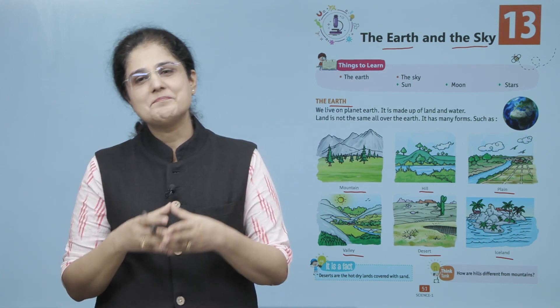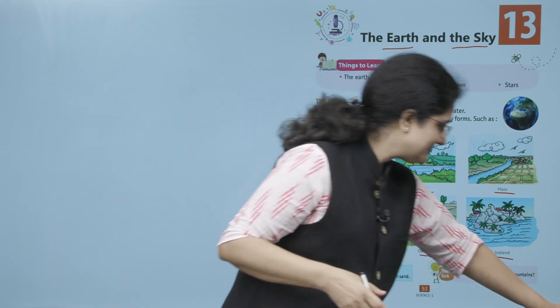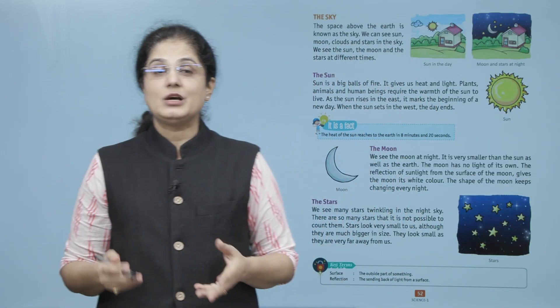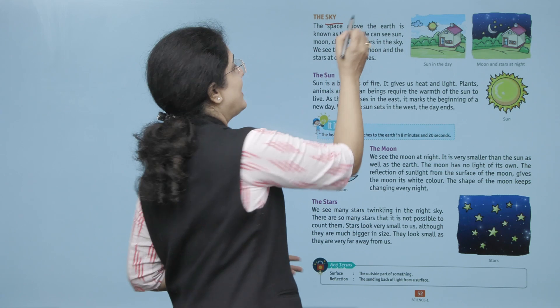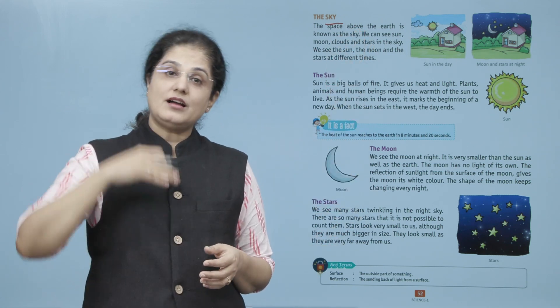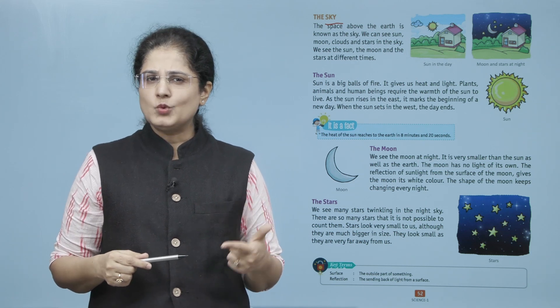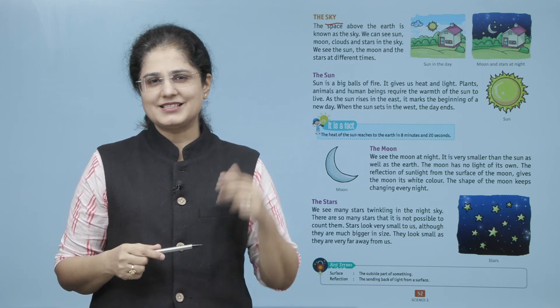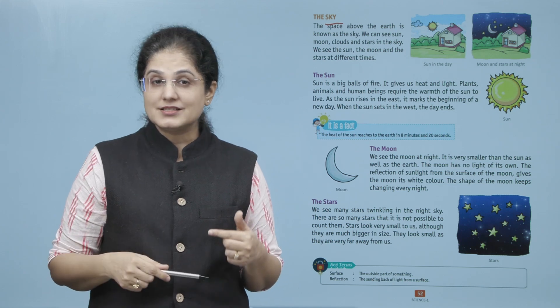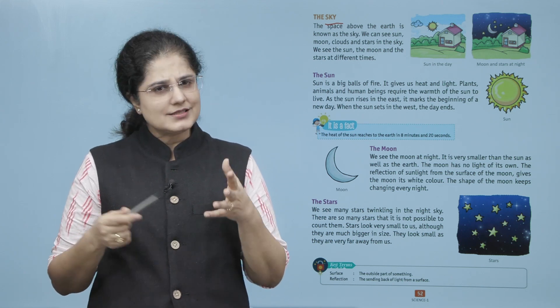Now let us look at the Sky. The space above the Earth is known as the Sky. We can see Sun, Moon, clouds and stars in the sky. We see the Sun, the Moon and the Stars at different different times.